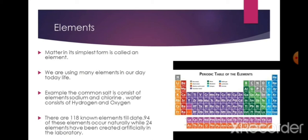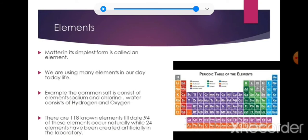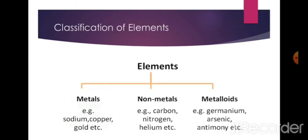There are 118 known elements in the periodic table. 94 of these elements occur naturally while 24 elements have been created artificially in the laboratory. Elements are classified into metals, non-metals, and metalloids based upon their chemical properties.